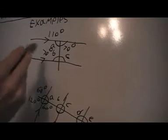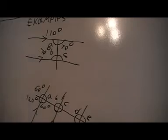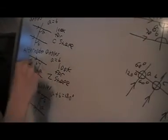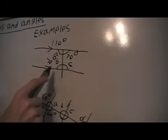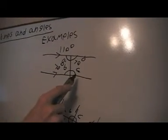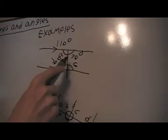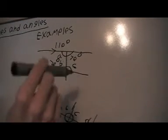And then there's two ways we could do this. We could use alternate angles here with a Z shape, and say that's 110. Or we could use this line here and say that these two angles are up to 180, which would mean this one here is 110.